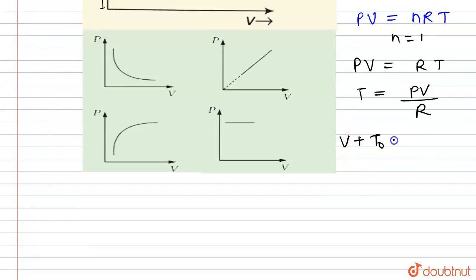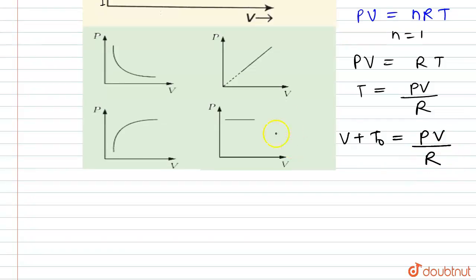So after rearranging we can write this as VR plus RT₀ equals PV. Or you can write RT₀ equals PV minus RV.